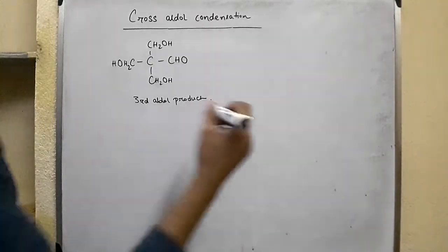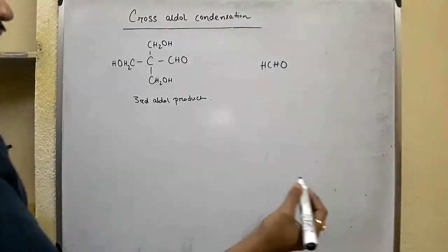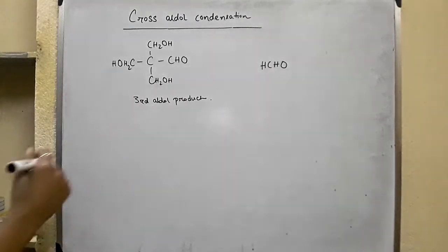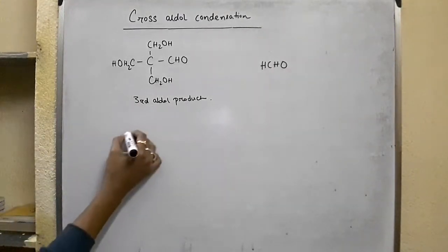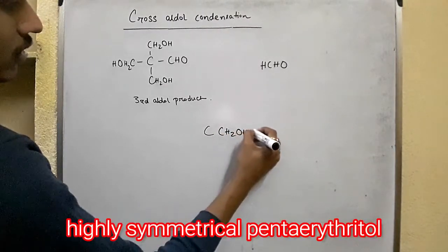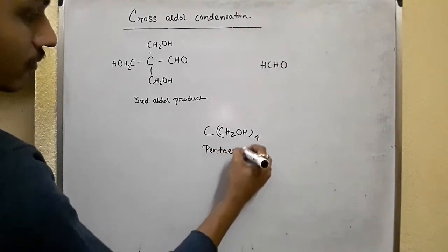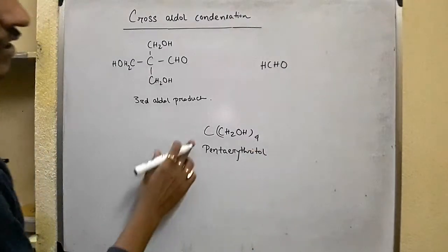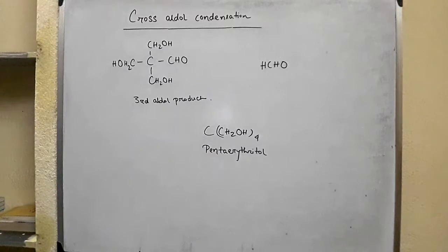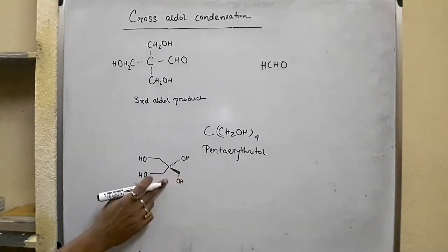A fourth molecule of formaldehyde then reacts with the hydroxide ion, which reduces the third aldol product via a Cannizzaro-type reaction, and finally we get our final product: pentaerythritol. This is the formula of pentaerythritol — it is the final product and is highly symmetrical.